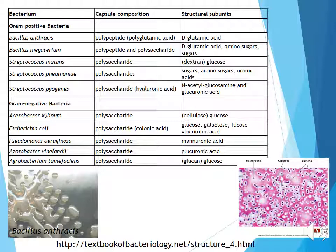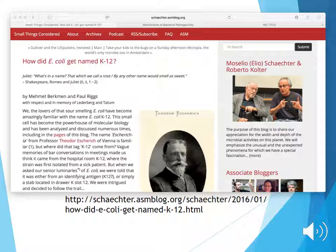Most pathogenic microbes do produce a capsule, but producing a capsule does not automatically make you pathogenic — it could just make you a good microbe for attachment and survival. It is really those organisms using the capsule to evade phagocytosis that are potential pathogens.